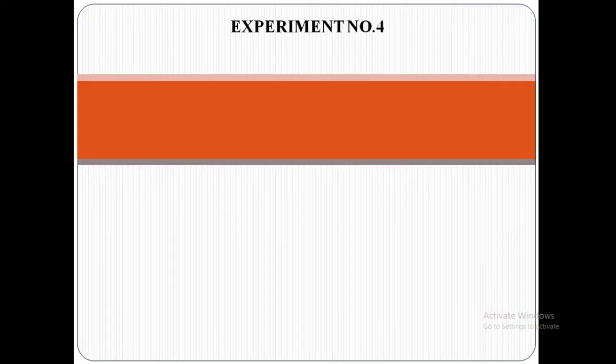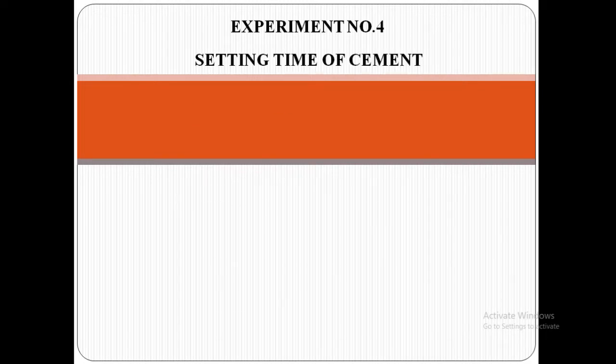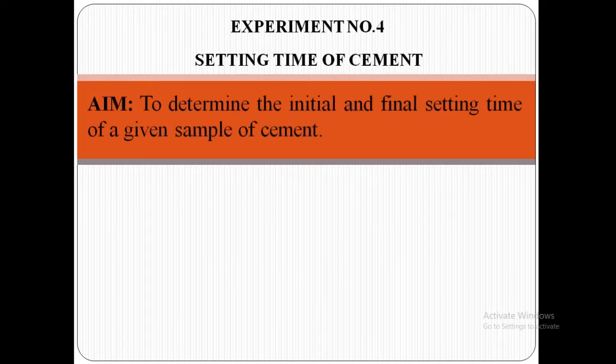Experiment number 4: Setting time of cement. Aim: to determine the initial and final setting time of a given sample of cement.